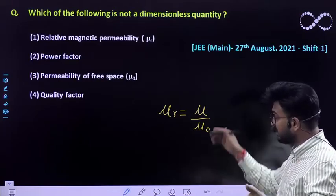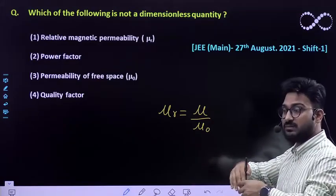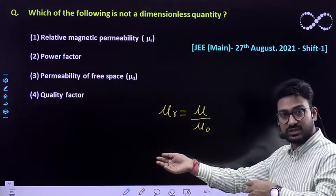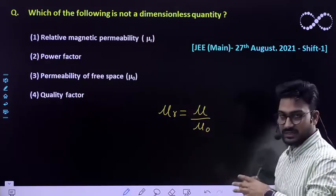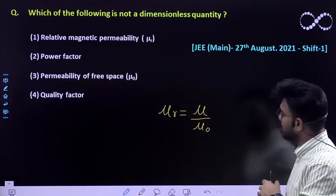So obviously it would be dimensionless, okay, because it is a relative permeability. So relative is itself a term which is measured from another quantity which is of the same nature. So that's why it is unitless or dimensionless.